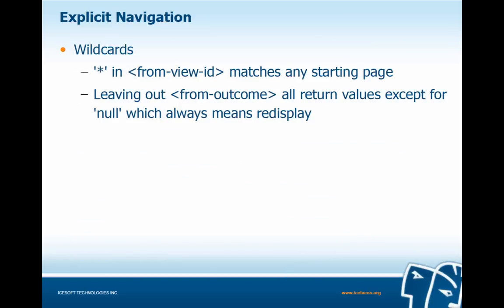We can also use wildcards in explicit navigation by adding an asterisk in the from-view-id. This means that from any starting page, if that from-outcome applies, we're going to transition to the to-view-id. And leaving out the from-outcome, all return values except for null will always mean re-display.